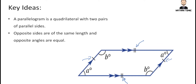Opposite angles are also equal. Here we have an angle represented with 'a degrees' and its opposite is the same, and similarly this angle marked 'b' and its opposite are also equal. There are other things we could discuss about parallelograms and quadrilaterals in general, but today we'll just focus on the fact that it has two pairs of parallel sides and two pairs of equal angles.